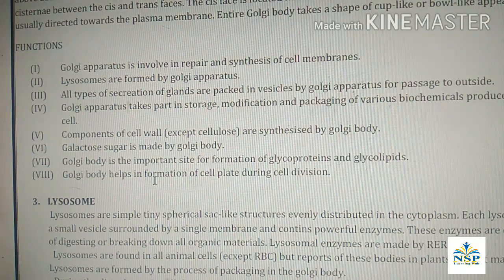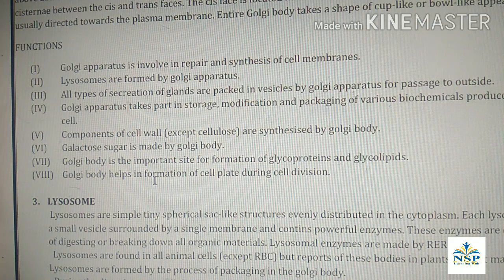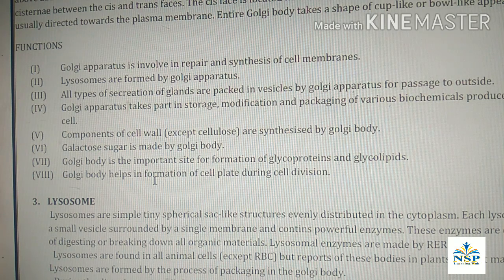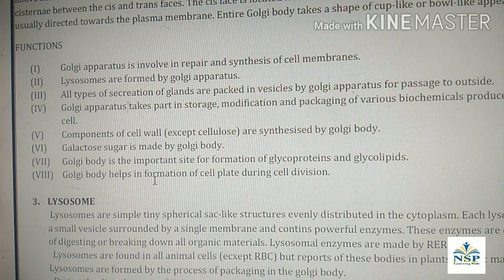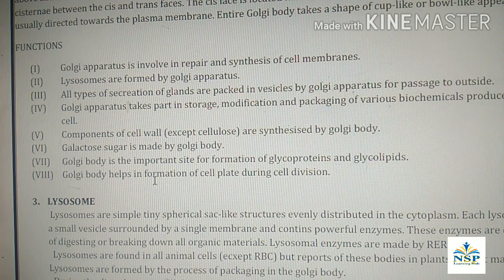Components of cell wall, except cellulose, are synthesized by the Golgi body. Galactose sugar is made by Golgi body. Golgi body is an important site for the formation of glycoproteins and glycolipids. Golgi body helps in the formation of the cell plate during cell division.